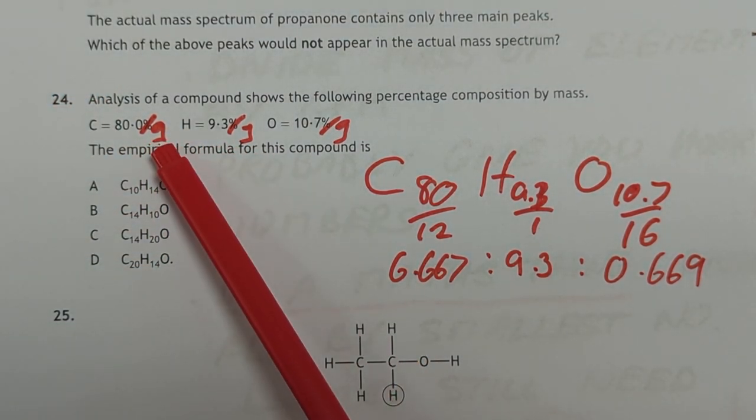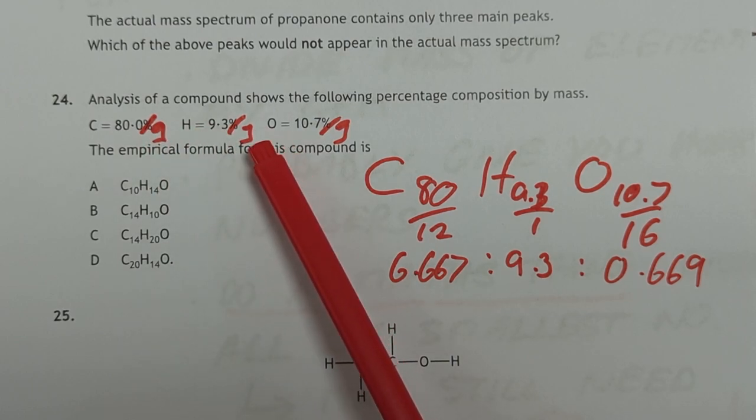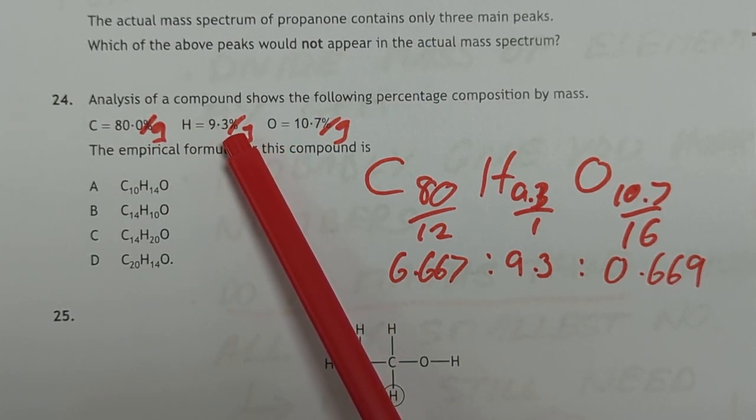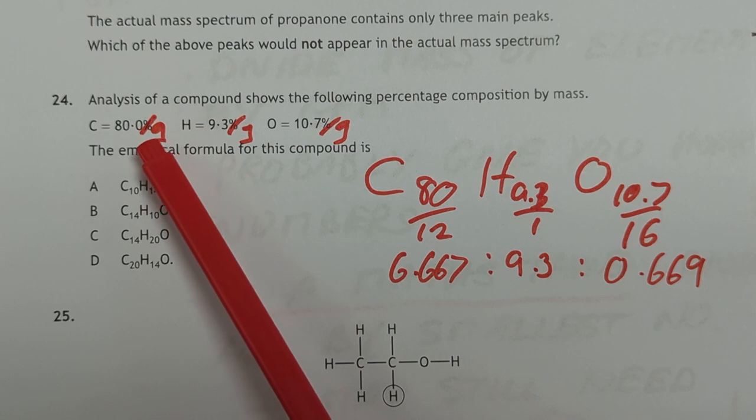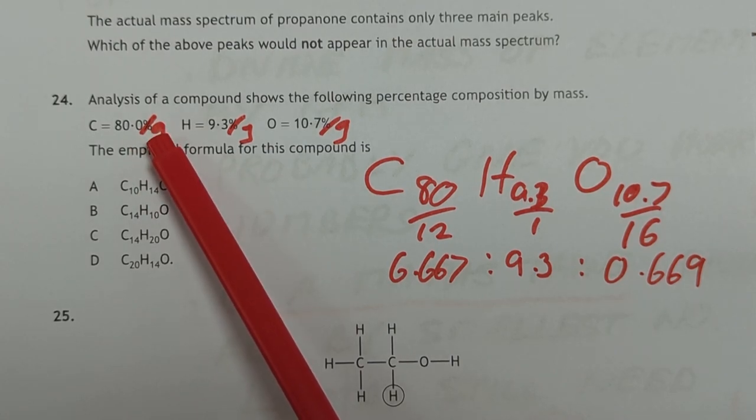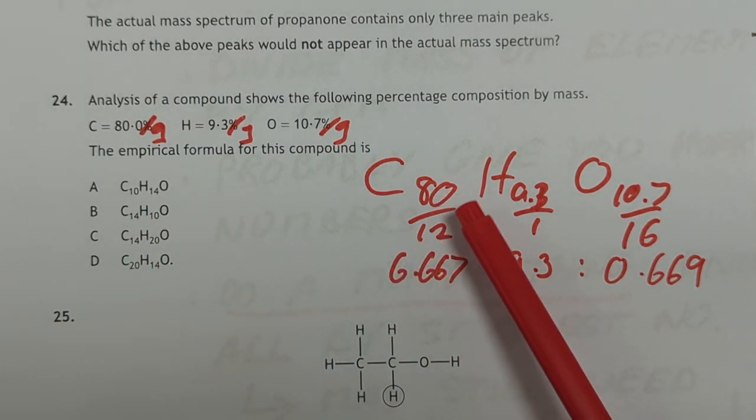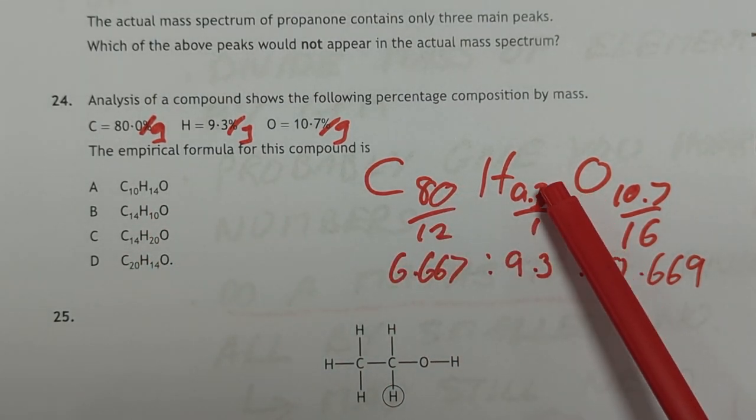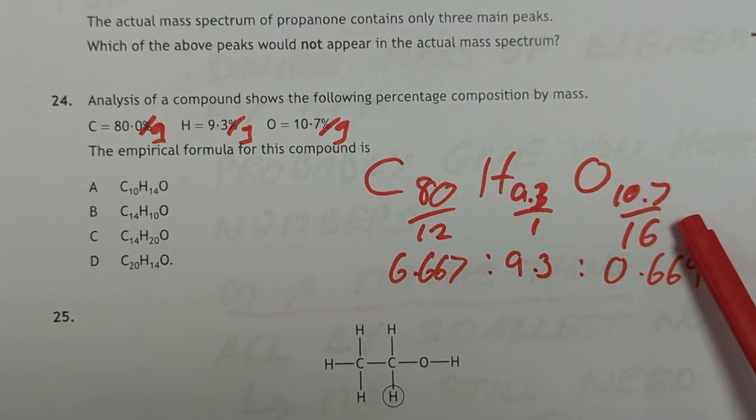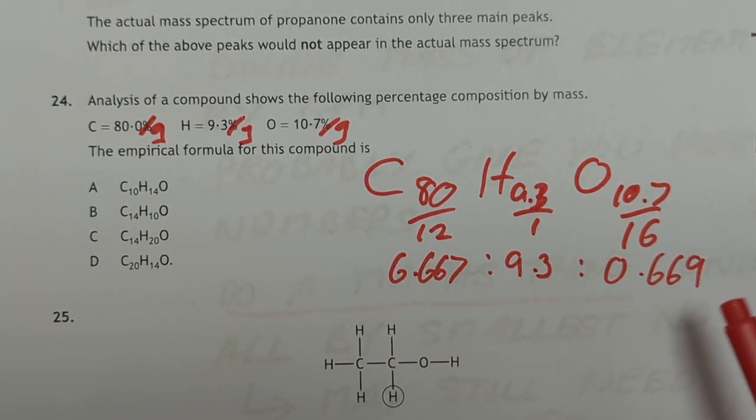In this particular one, they haven't given you a mass. They've actually, sorry, I scored it out from the previous attempt. They were actually percentages. So I'm saying, nope, just score it out and replace it with grams. So now we have 3 masses. We can proceed with the calculation. 80 over 12 for carbon, 9.3 over 1, 10.7 over 16 gives you this. Now this is quite nice because this is a classic example of horrible ratio.